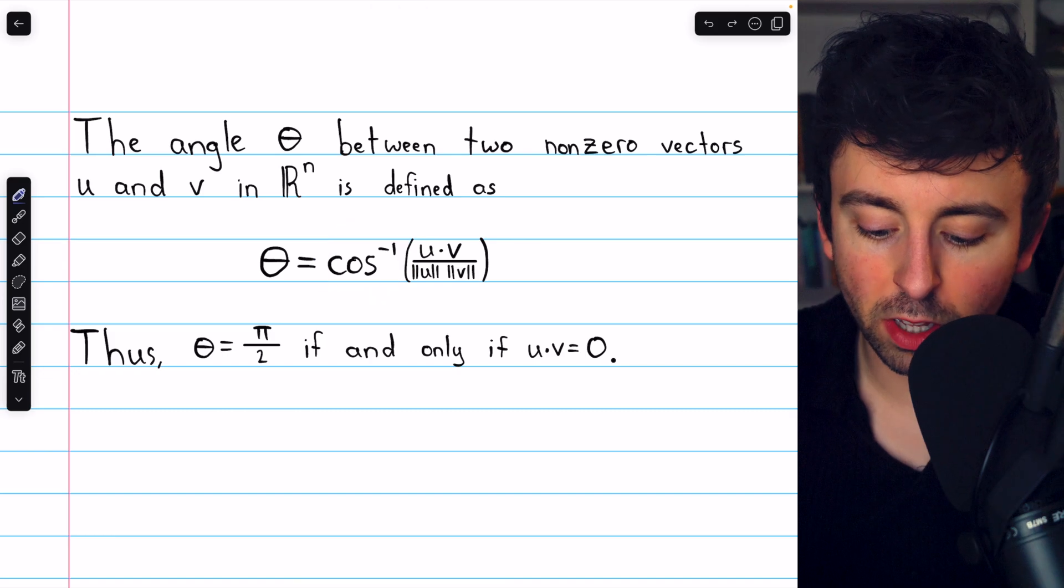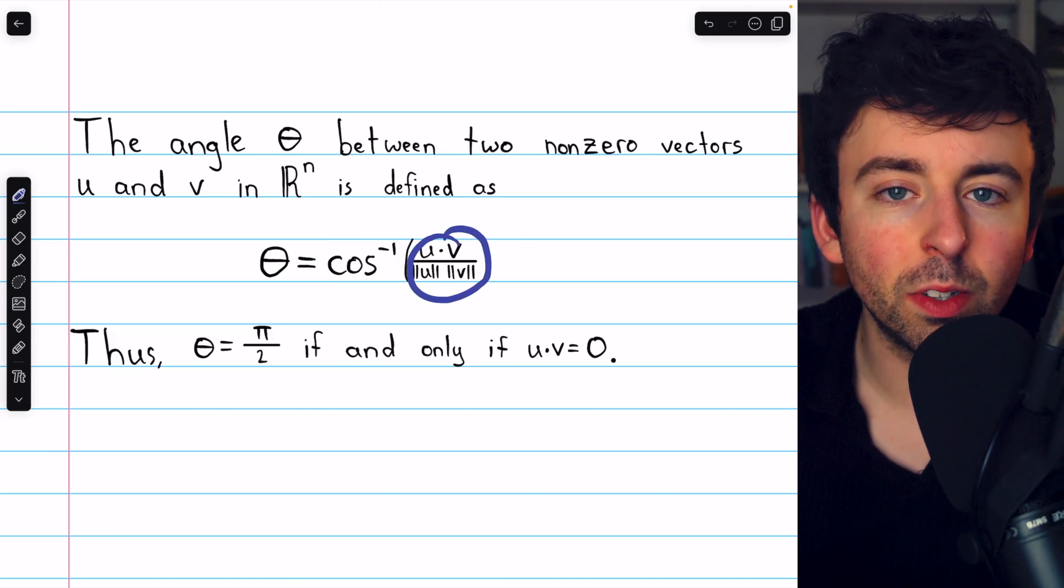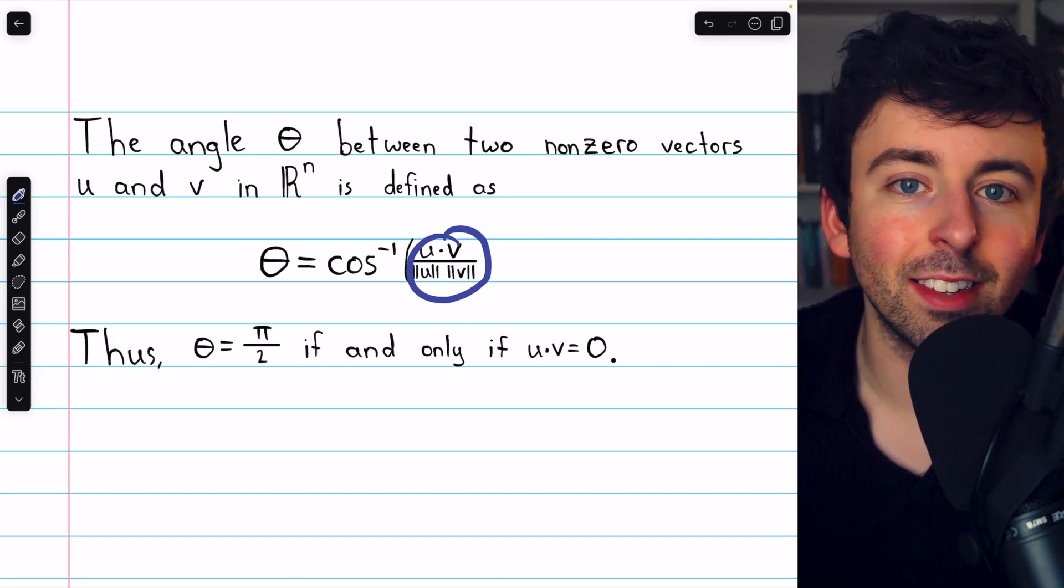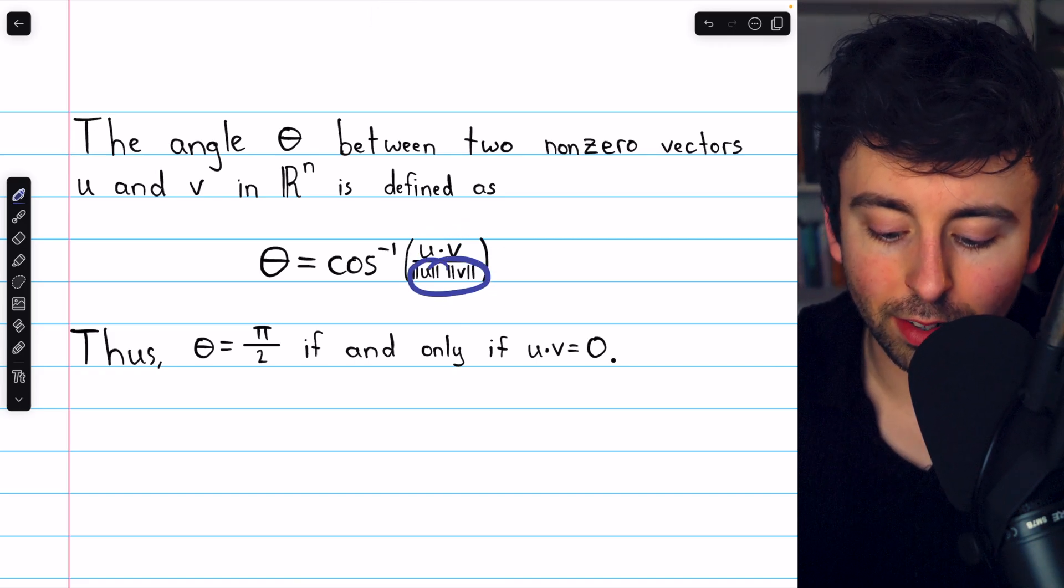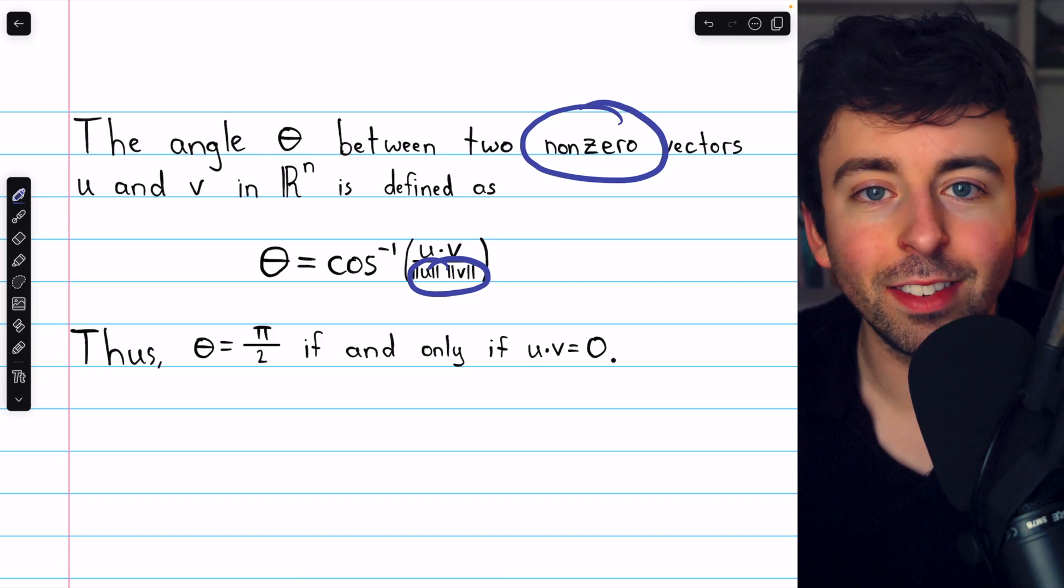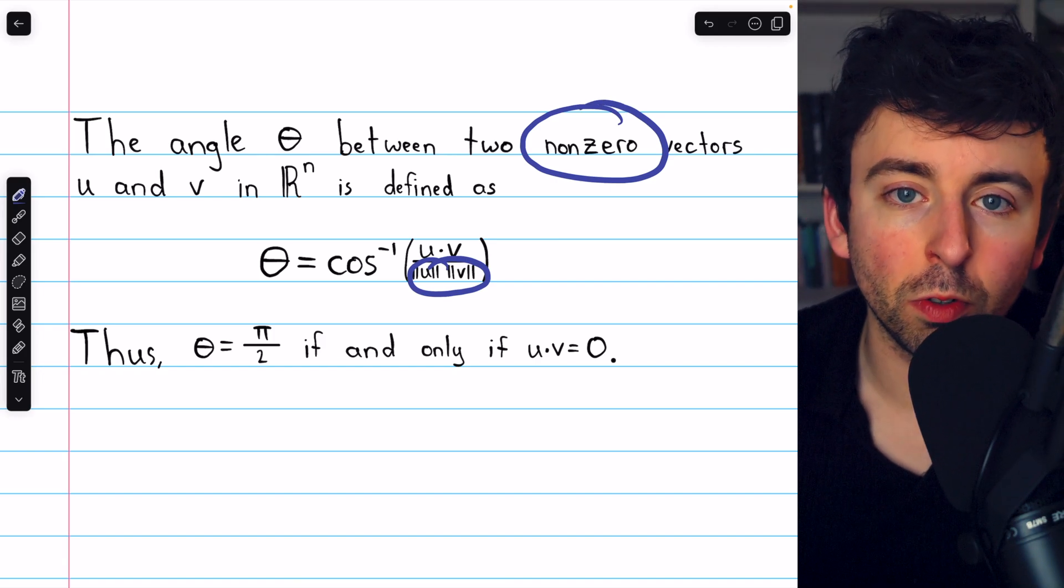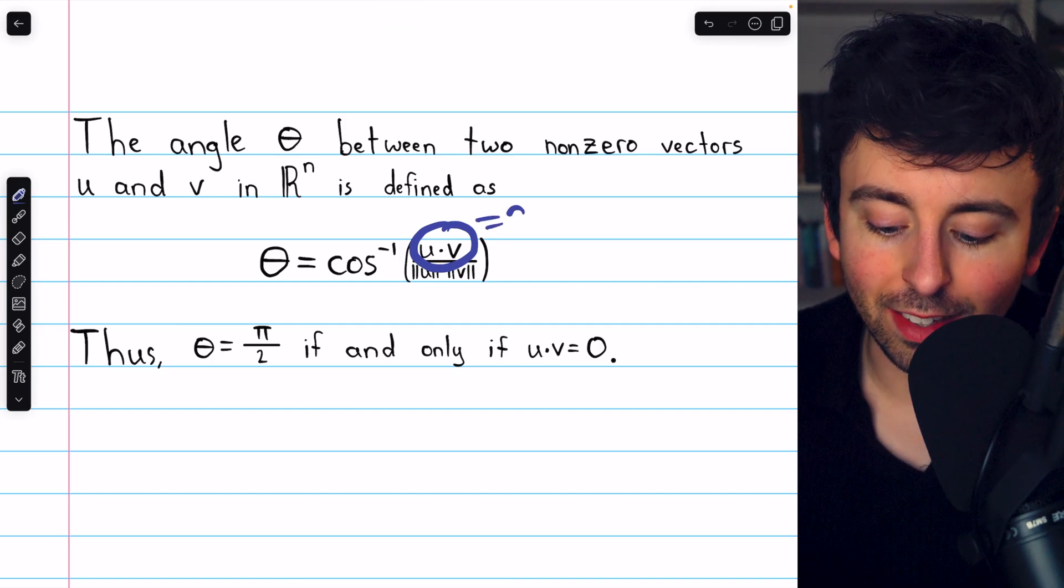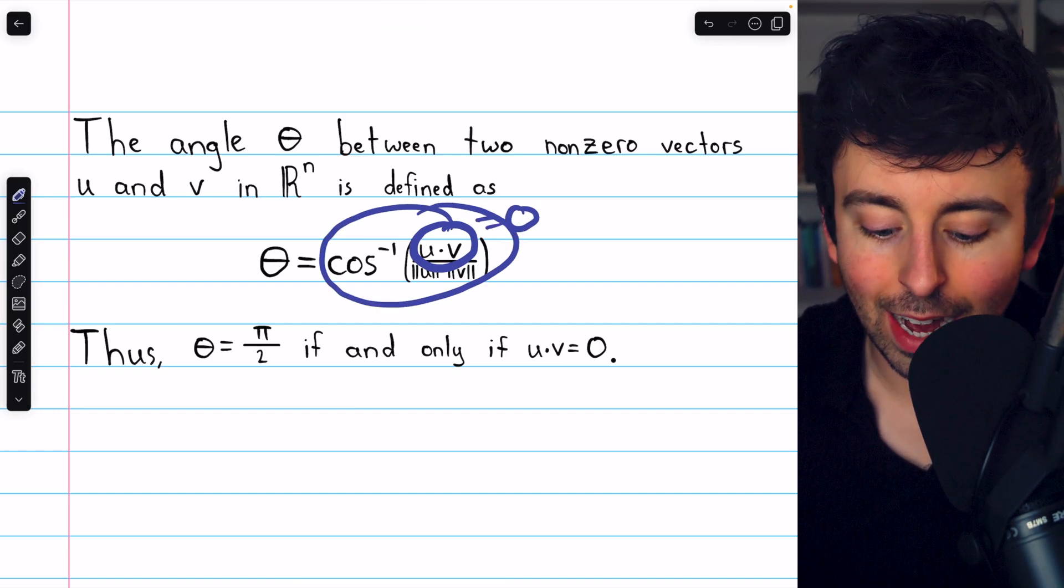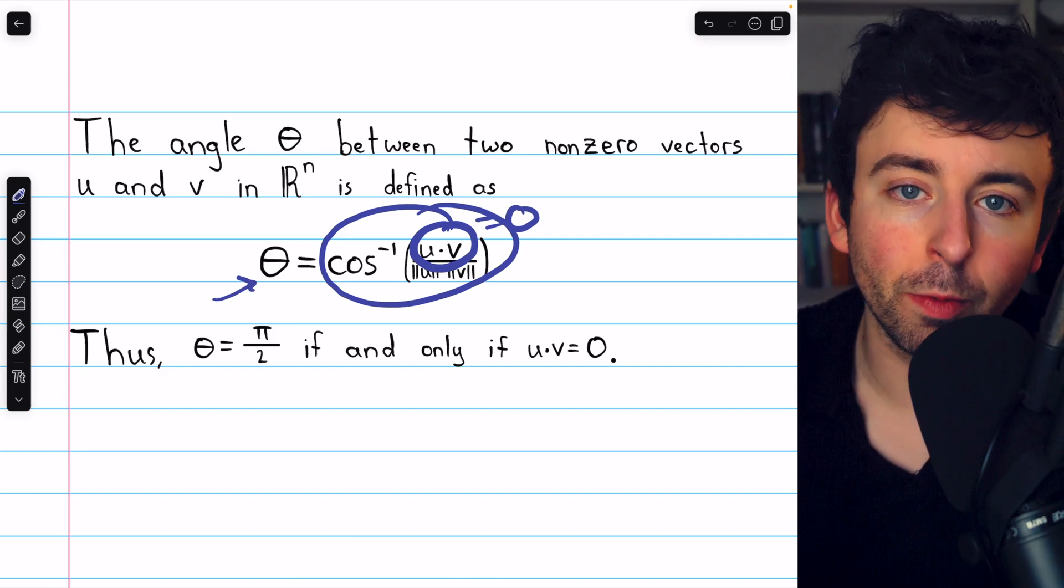Well, the input here, u dot v divided by the magnitudes, would be 0, only if the dot product is 0. The division is never going to be a division by 0, because we're saying the vectors are non-zero, so their magnitudes are non-zero as well. But if the dot product is 0, that's what's going to make this inverse cosine, and hence the angle, pi over 2.